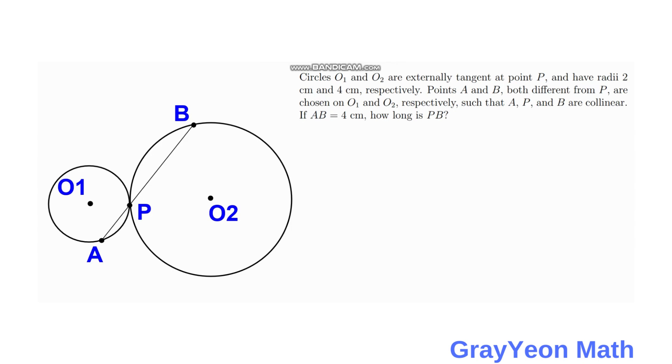Points A and B are both different from P. They are chosen on O1 and O2 respectively, such that A, P, B are collinear. If AB is equal to 4, how long is PB?